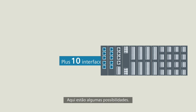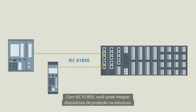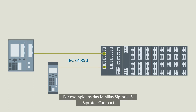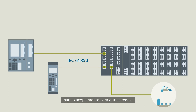Here are just a few possibilities. With IEC 61850, you can integrate protection devices into the structure — for example, from the C-Protek 5 and C-Protek compact families. Or you can use Ethernet interfaces for the coupling with other grids.